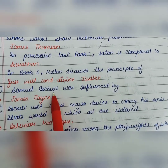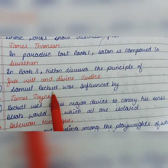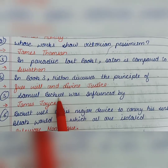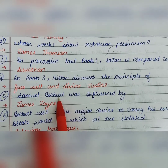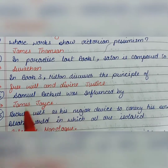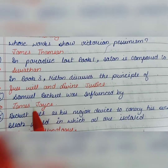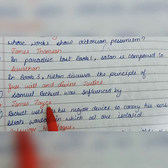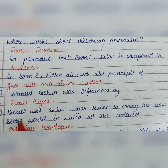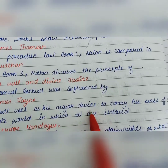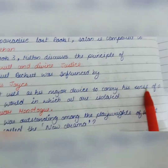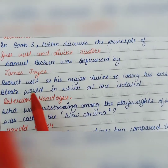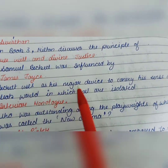Samuel Beckett, who is very famous for Waiting for Godot and absurdist works, was influenced by James Joyce. James Joyce is a famous Irish writer. So Beckett was majorly influenced by James Joyce.